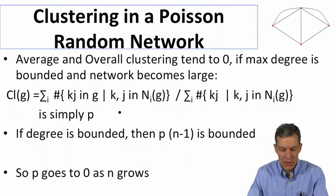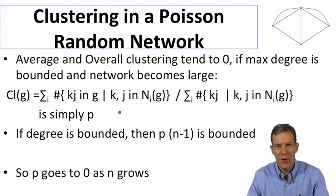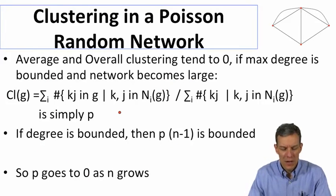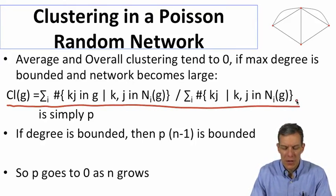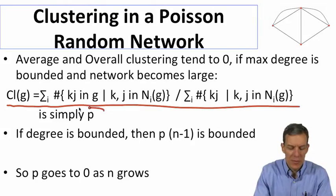Now, one thing that's going to be important in this setting is that when we compare this to what happens in a network uniformly at random, if we ask what's the clustering number in a uniformly at random network, well, this is simply going to be P.